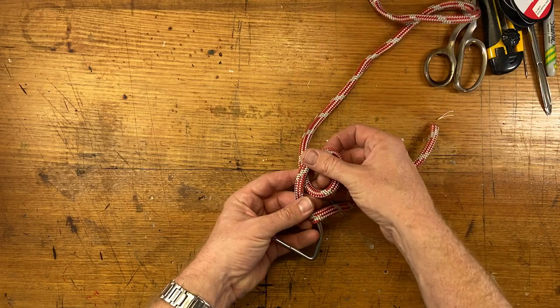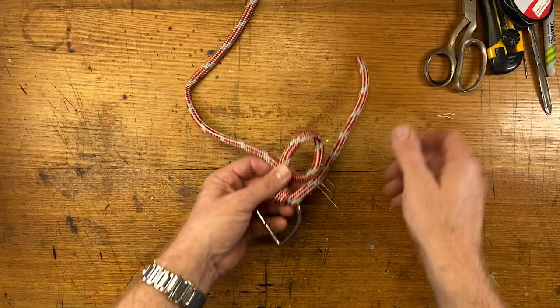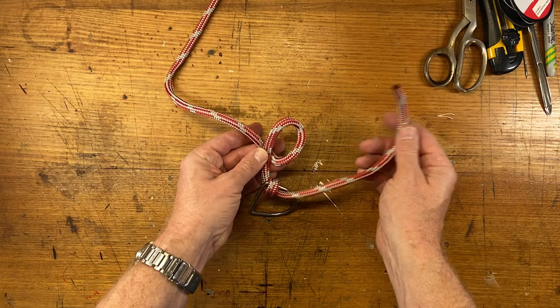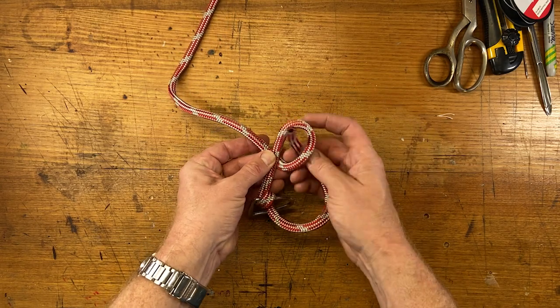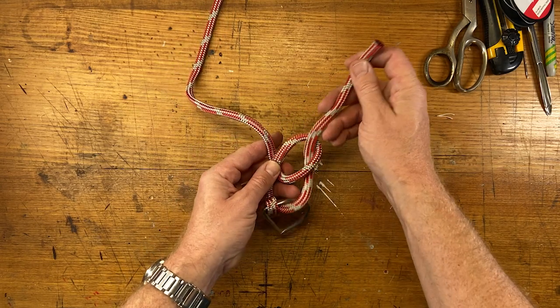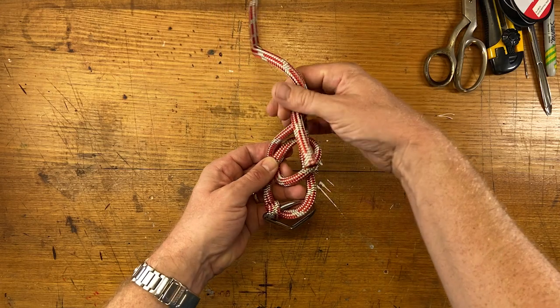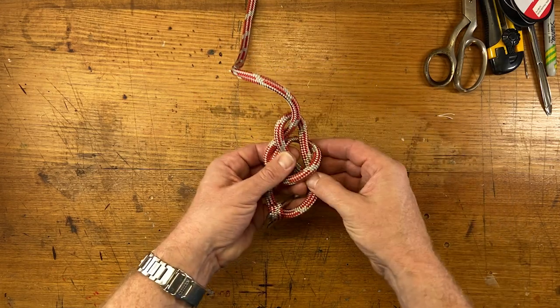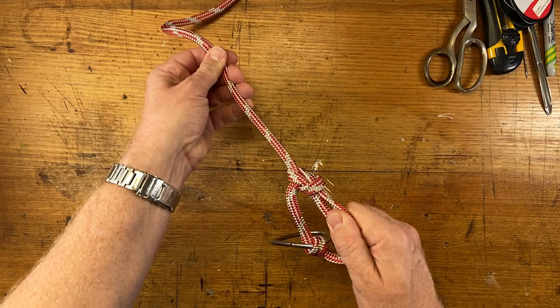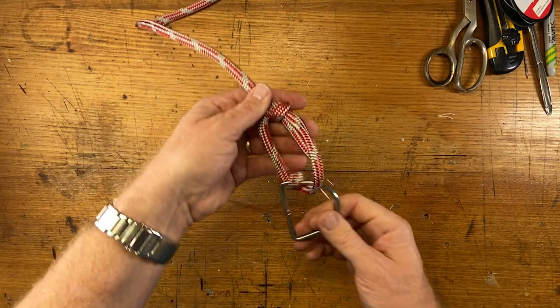So we've got our loop. Let's call that a hole. And we've got a tree here. The bitter end is a rabbit, and the rabbit comes up out of his hole, sees a fox, runs around the tree and goes back down his hole again. Cute little story. And then dress the knot. That's it. That's the anchor road hitch.